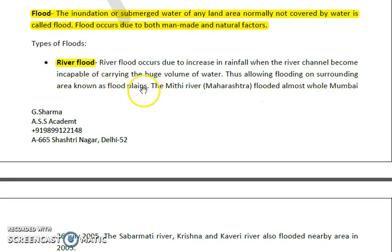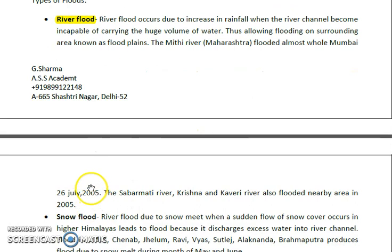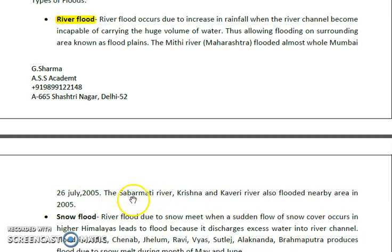These surrounding areas are known as flood plains. For example, the Mithi River in Maharashtra flooded almost the whole of Mumbai on 26 July 2005. Similarly, the Sabarmati, Krishna, and Kaveri rivers also flooded nearby areas in 2005. These are two examples of river flood.